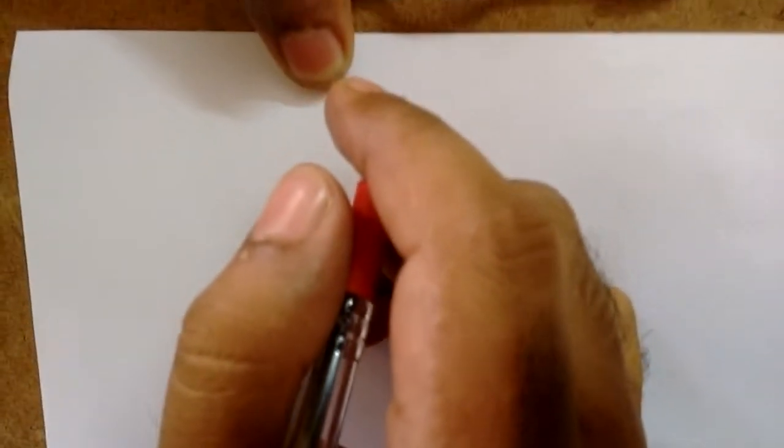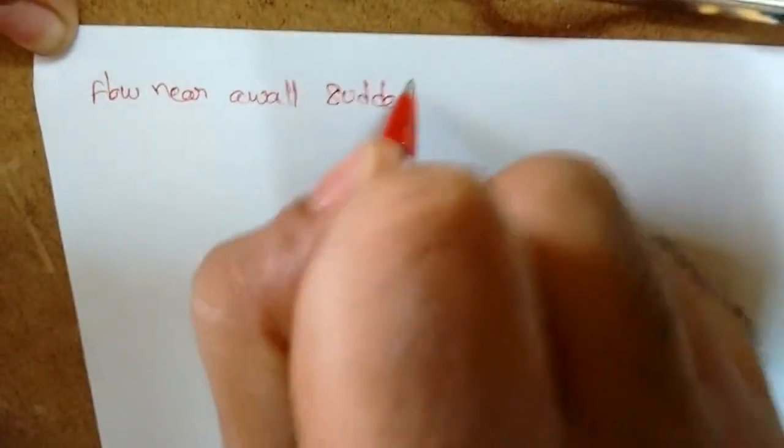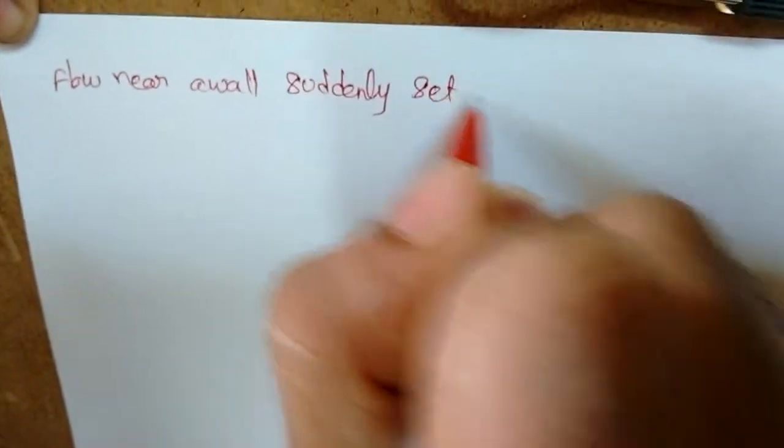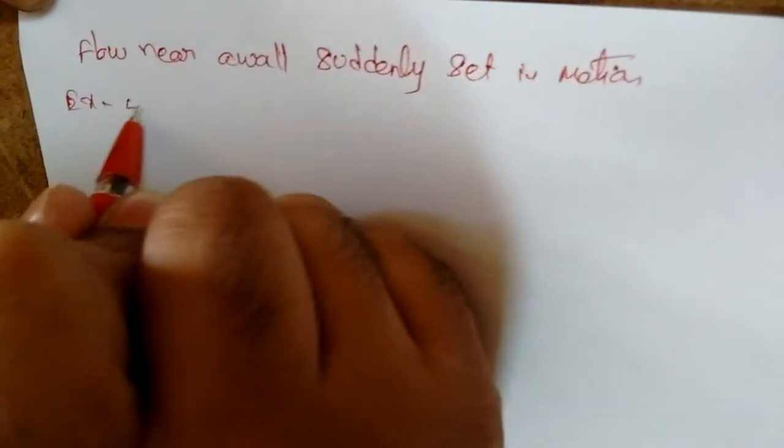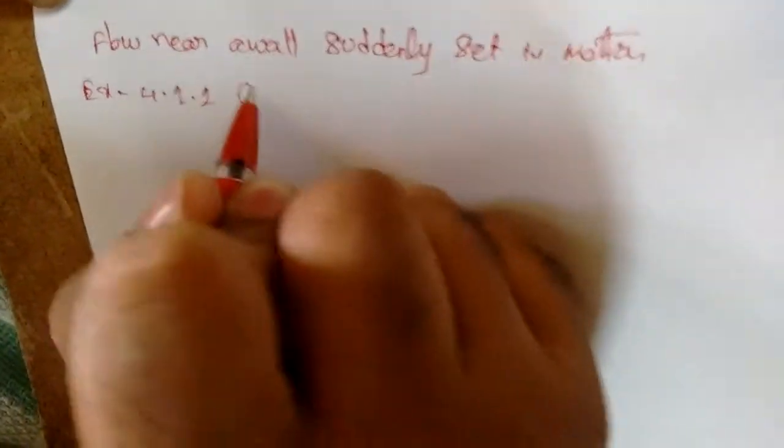In this lecture we discuss unsteady state problems. The first problem is flow near a wall suddenly set in motion. This is example problem 4.1.1 in Bird, on page 115.